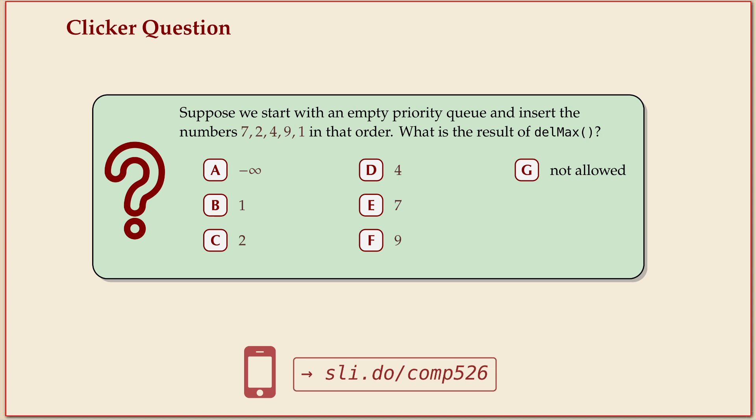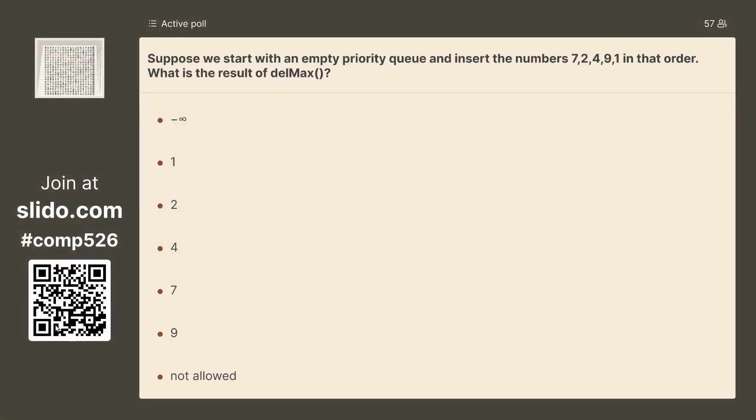All right, let's again briefly check that the definition is clear. So here's a bunch of numbers that are inserted into a priority queue, come on. And then you call delete max, it's not supposed to be a trick question. All right. We have a clear majority and you can still put your vote in.